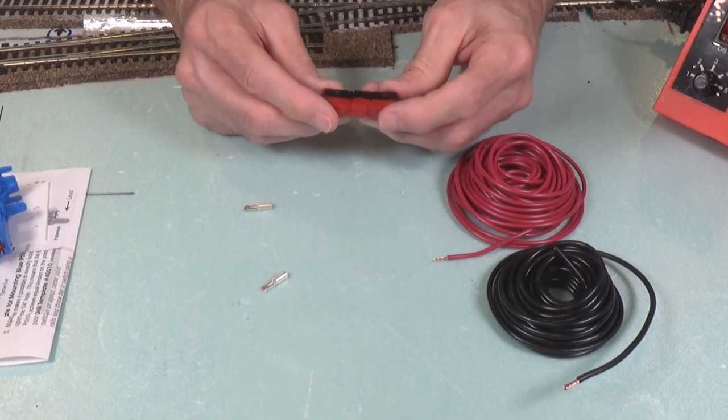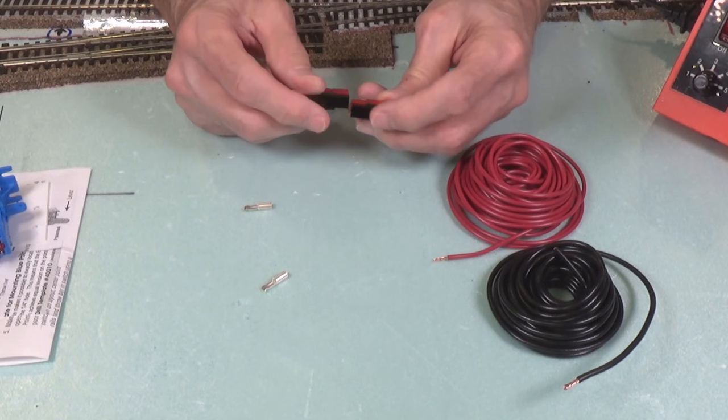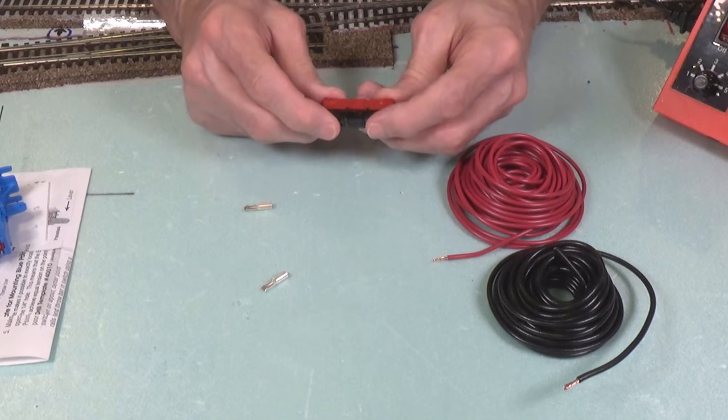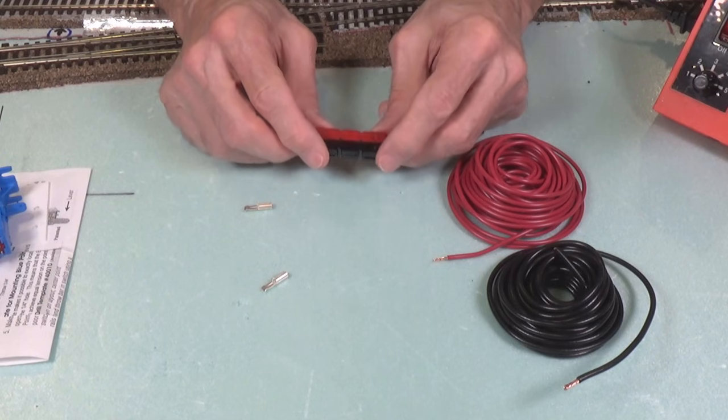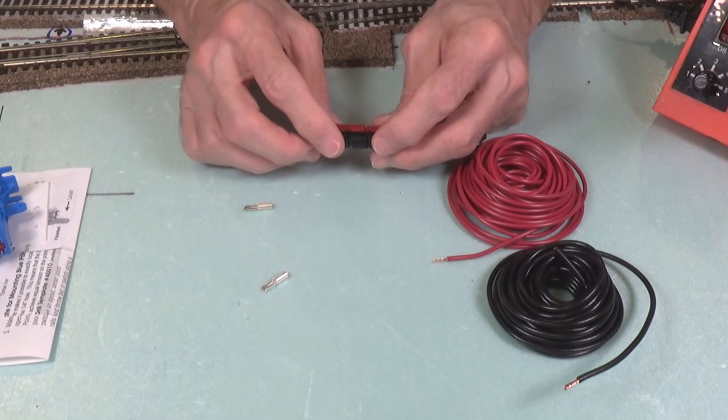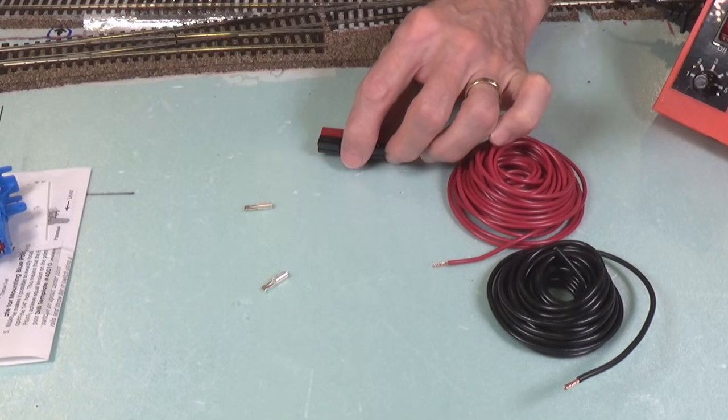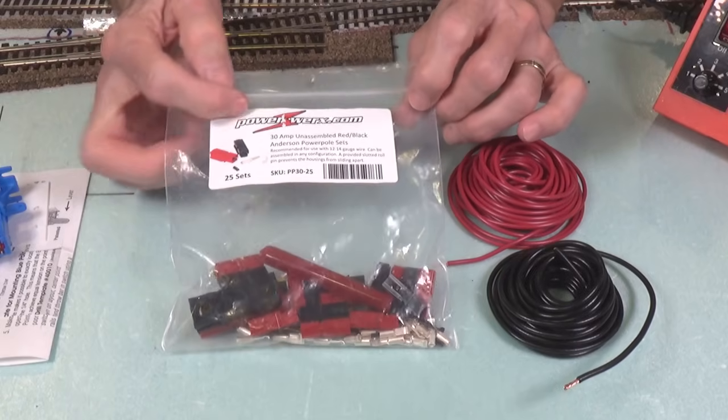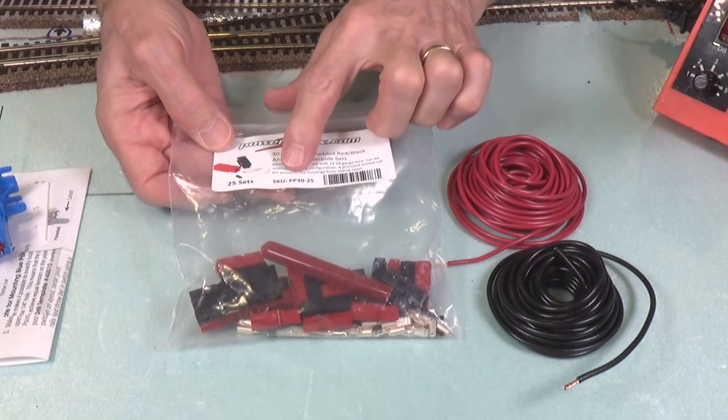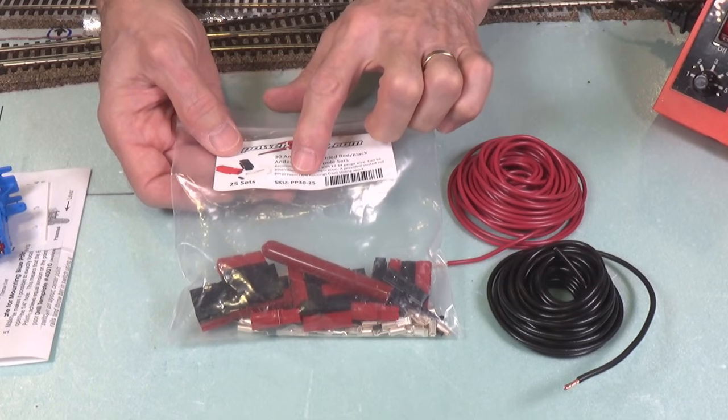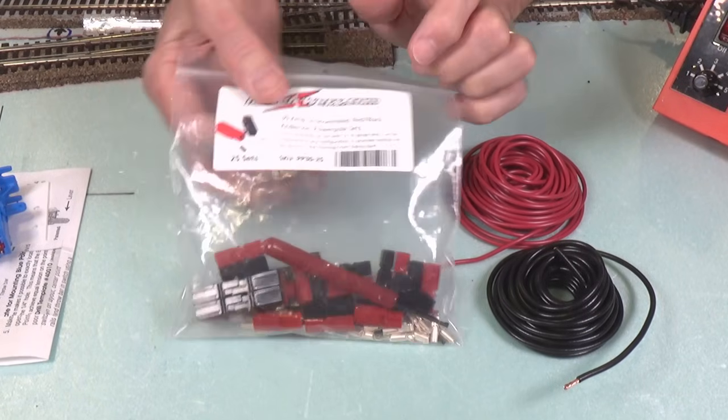I want to show you how to make up one of these connectors because I use these on each end of the DCC power bus. I use red and black for the power bus to match the red and black here on the connectors. You can only connect these in one way. They will not connect this way, so you always get the polarity correct. Once they are made up, they click as you put them together and form a nice positive connection. I get these from a company called PowerWerx, P-O-W-E-R-W-E-R-X dot com, and the stock number is PP30-25.